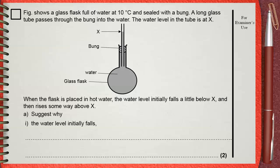When the flask is placed in hot water, the water level initially falls a little below x and then rises some way above x. Suggests why the water level initially falls.